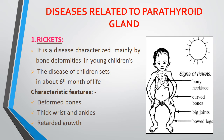Now we will see disease conditions related to the parathyroid gland. The first is rickets — a disease characterized mainly by bone deformities in young children. It sets in at about 6 months of life. Characteristic features include deformed bones (as seen in the figure), thick wrists and ankles, and retarded growth.